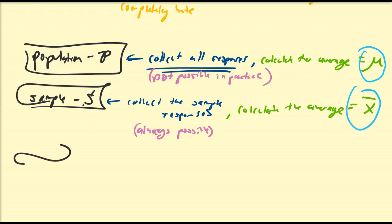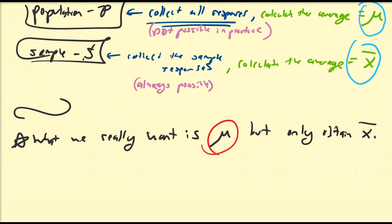What we really want is mu. But can only obtain x-bar. X-bar and mu are calculations. Mu comes from the population P, x-bar comes from the sample S.